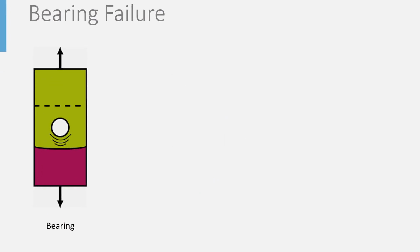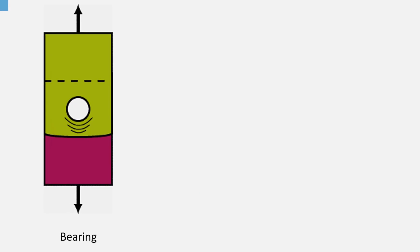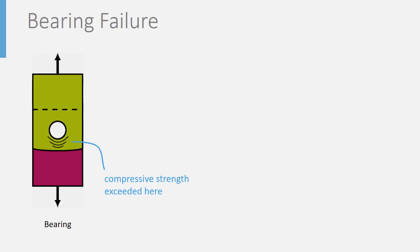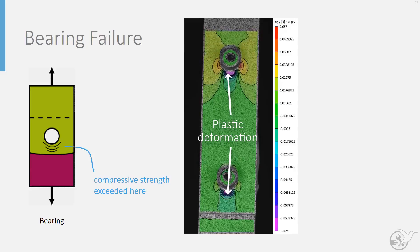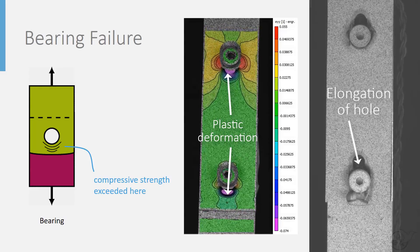The final failure mode is known as bearing failure. If the load can pass the net section and region of shear tear-out without causing either of the previous failure modes, it is still possible for the compressive stresses in the contact region of the fastener and sheet to exceed the compressive yield strength of the sheet material. This failure mode causes permanent plastic deformation within this contact region resulting in elongation of the fastener hole.